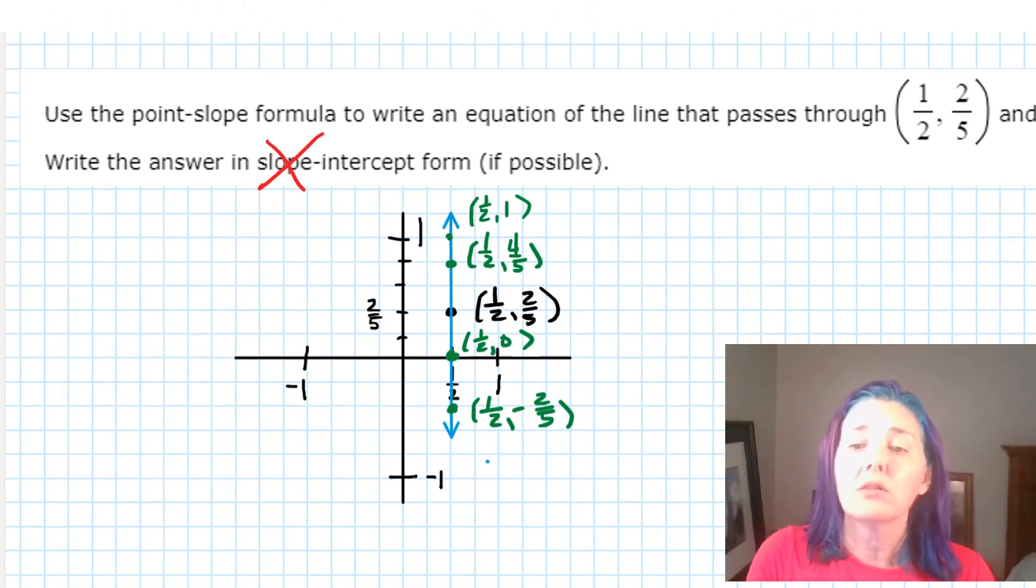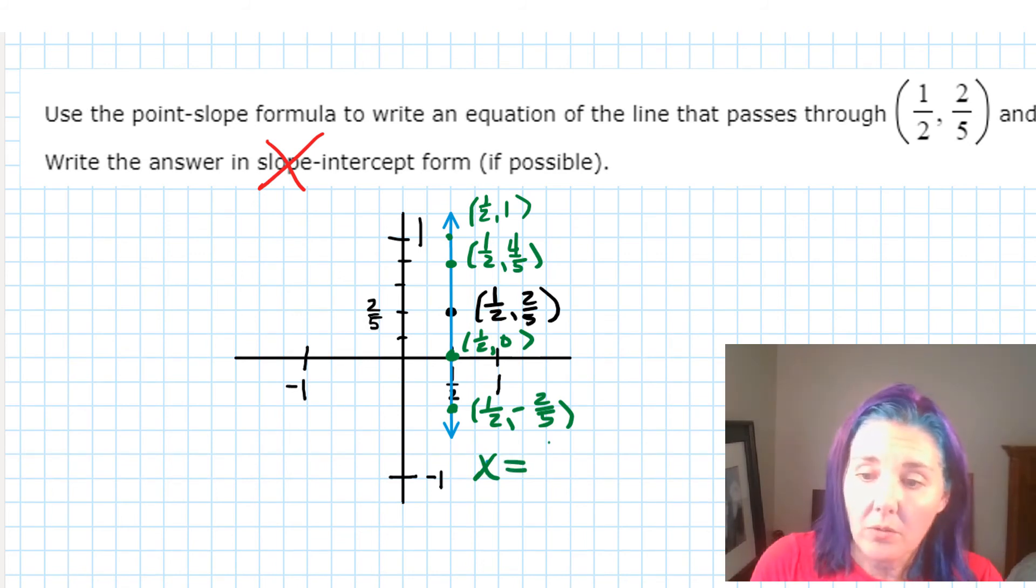What do all of these points have in common? They all have an x value of one-half. So what that tells you is that y can be anything, but x has to be defined to be one-half. So x is always equal to one-half, and that's exactly the equation of the line.